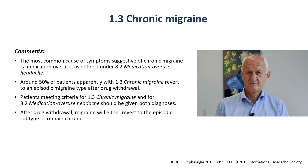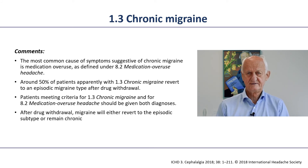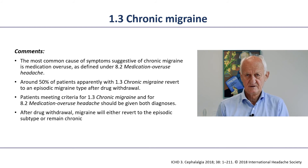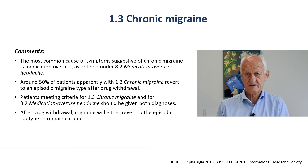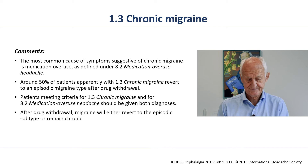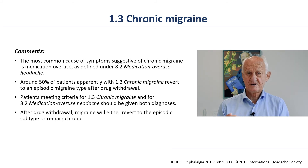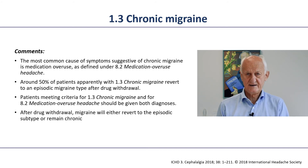The most common reason for migraine to become chronic is medication overuse. Chronic migraine virtually always starts as episodic migraine that gradually becomes worse. When patients are taken off medication overuse without anything else, about 50% no longer have chronic migraine but revert to episodic migraine. Patients who have chronic migraine and medication overuse must receive both diagnoses. After stopping medication overuse, they will later be reclassified as either episodic or still chronic migraine.